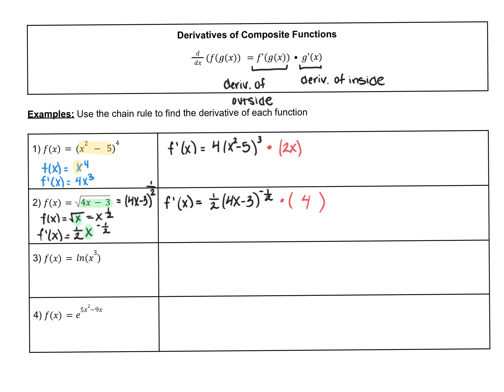For ln of x³: we treat this as if it were f of x equals ln of x, whose derivative is 1 over x. So f prime of x is 1 over x — but instead of x, we write x to the third — giving us 1 over x to the third. Then we always multiply by the derivative of the inside. The inside is x to the third, and by the power rule that derivative is 3x squared.